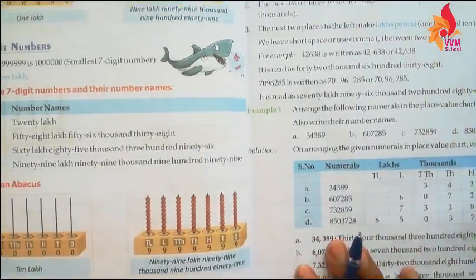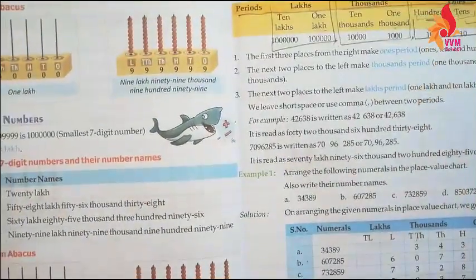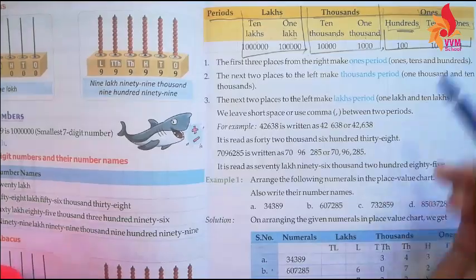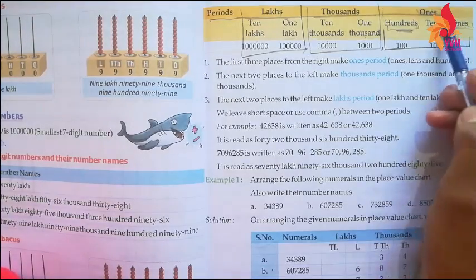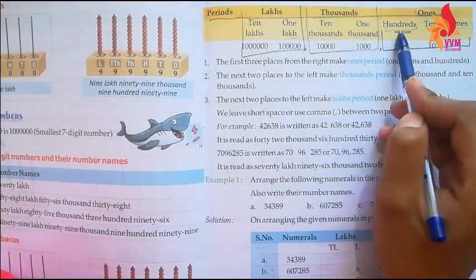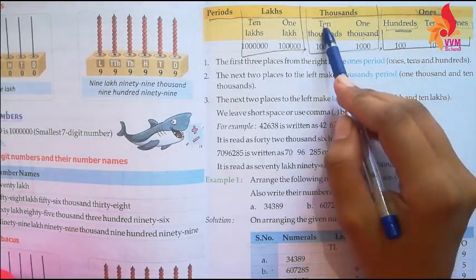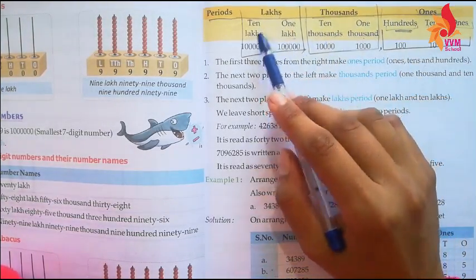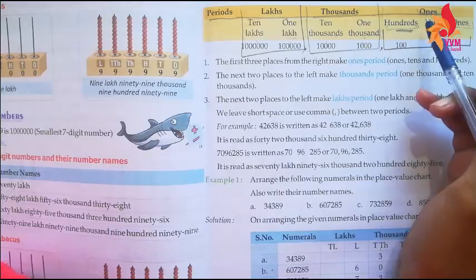Then we have place value. The place value positions are: ones, tens, hundreds, thousands, ten thousands, one lakh, and ten lakh according to the Indian system.